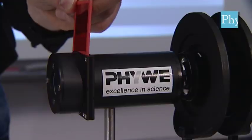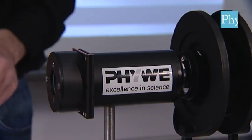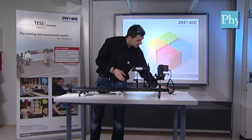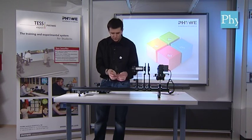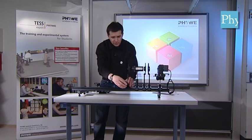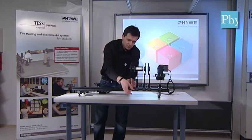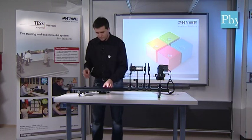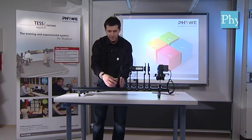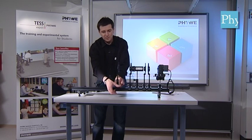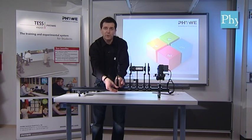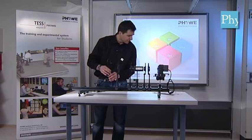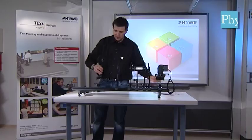Into this Fabry-Pérot interferometer we can mount the red filter, because with the red spectral line of the cadmium lamp we will observe the normal Zeeman effect. After the Fabry-Pérot interferometer, we need to insert a lens of 300 mm focal length. The analyzer, with which we analyze the different polarizations of the split line components, can be placed after that.